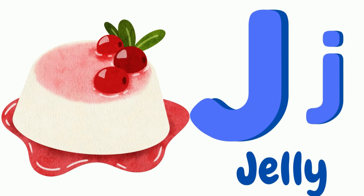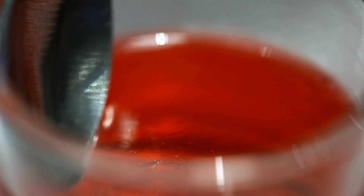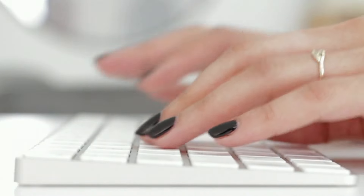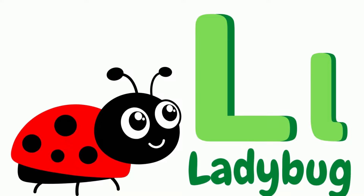I is for Igloo. Igloo, igloo. This is an igloo. Igloo, igloo. J is for Jelly. Jelly, jolly. This is jelly. Jelly, jolly.